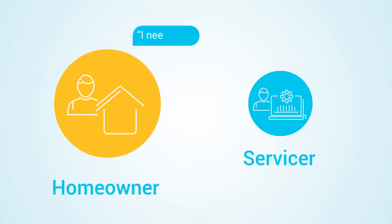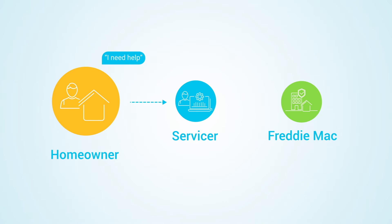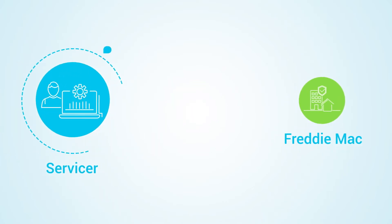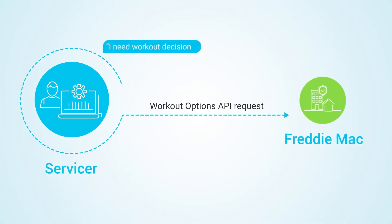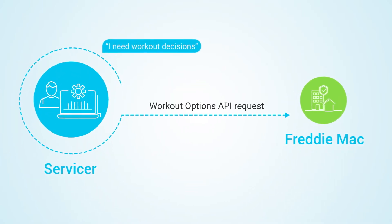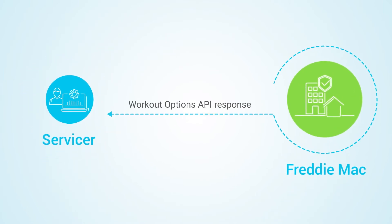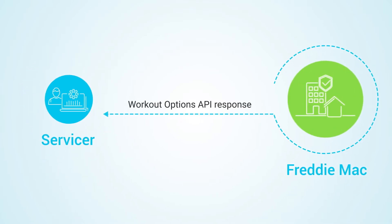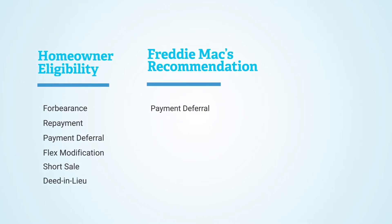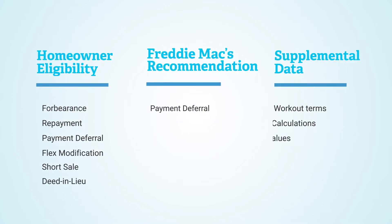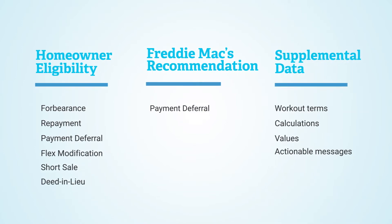Let's look at an example. A homeowner experiences a hardship and needs mortgage relief. A servicer sends a request to Freddie Mac using Resolve APIs. The Workout Options API returns a response that includes homeowner eligibility, Freddie Mac's recommendation, and supplemental data.